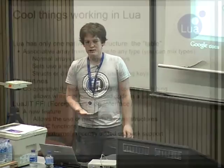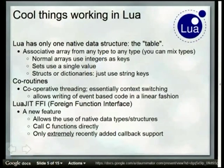It's also got coroutines built into the language, which is essentially context swapping, and is very useful when dealing with callback-based APIs. In node.js, for example, you end up writing every function with a callback. If you swap this to being coroutine-based, your callback just resumes your function wherever it left off, which means you can write everything in a very linear fashion.